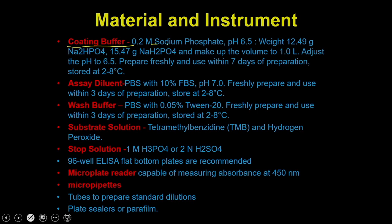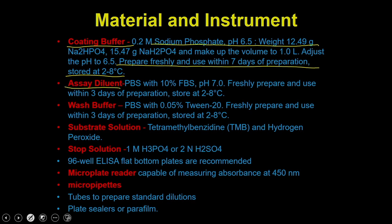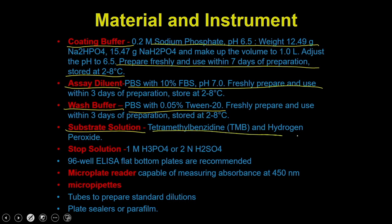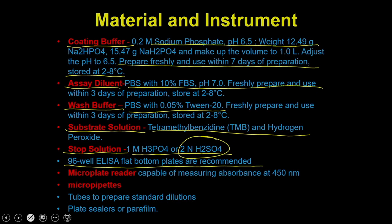You also require a coating buffer — prepared fresh and used within 7 days — and SA diluent (PBS) for preparing sample dilutions. The wash buffer contains PBS plus Tween-20. The substrate solution is TMB and hydrogen peroxide. Once the reaction is over, you need a stop solution containing H3PO4 or sulfuric acid. You also need a 96-well plate, a microplate reader that captures absorbance at 450 nm, and micropipette tubes.